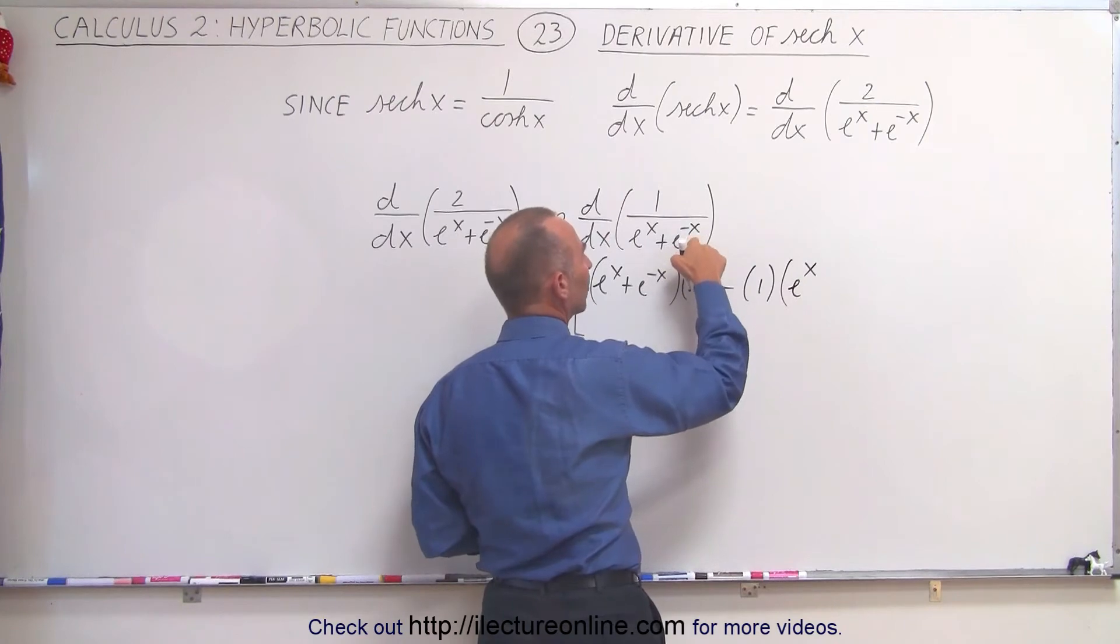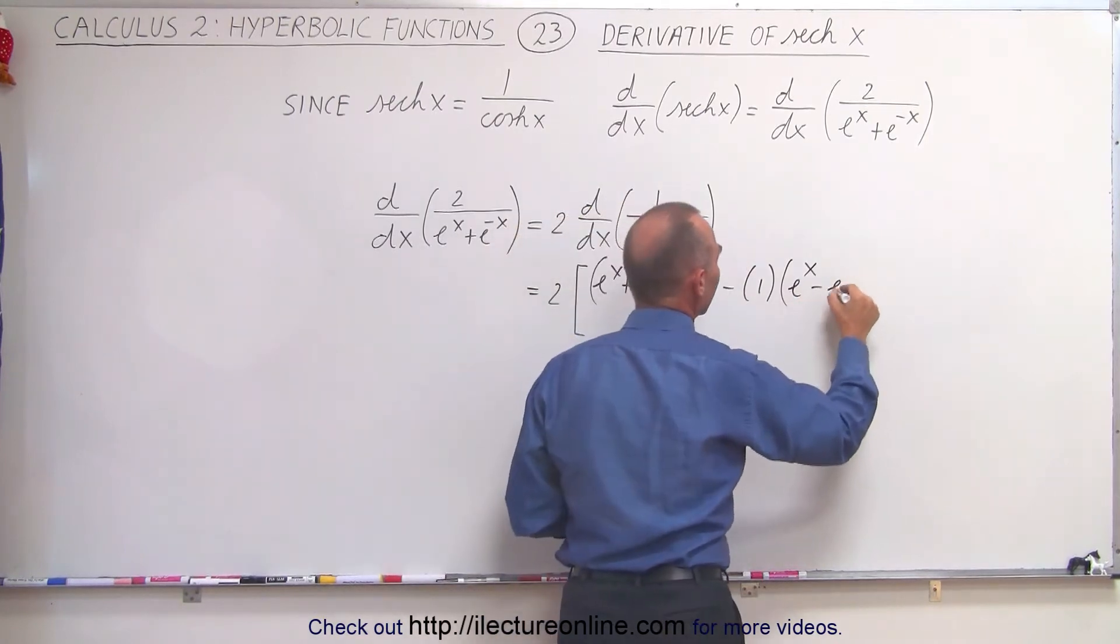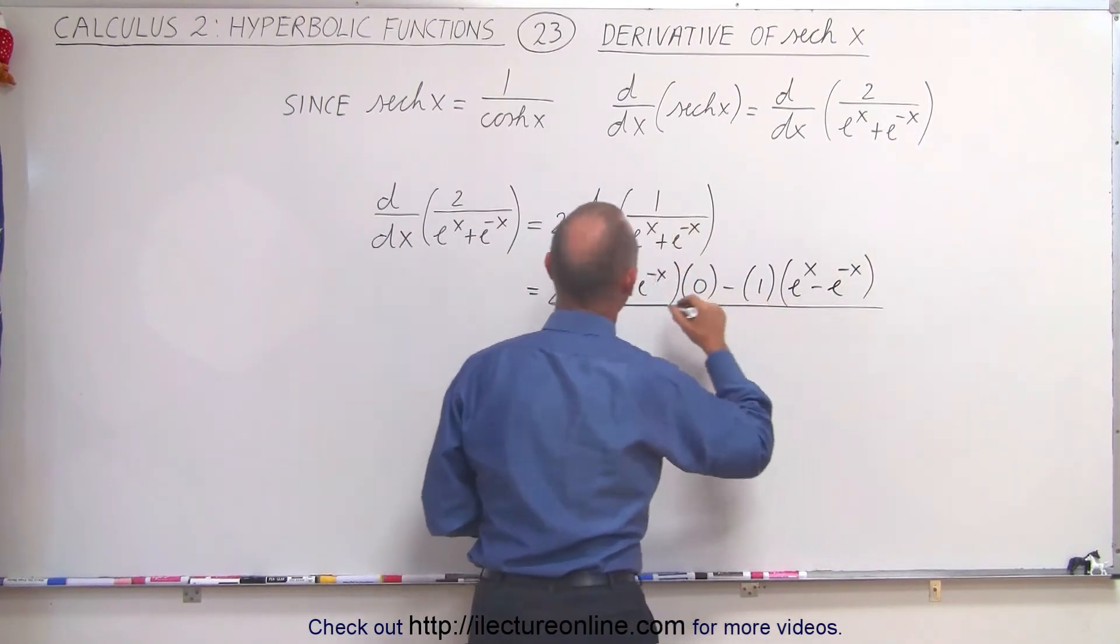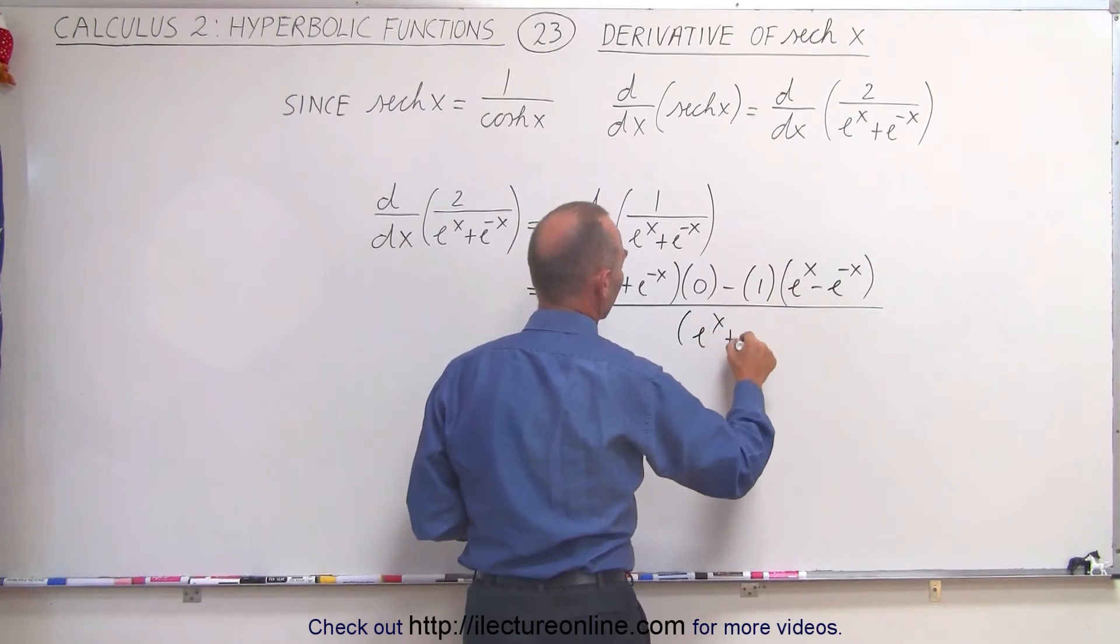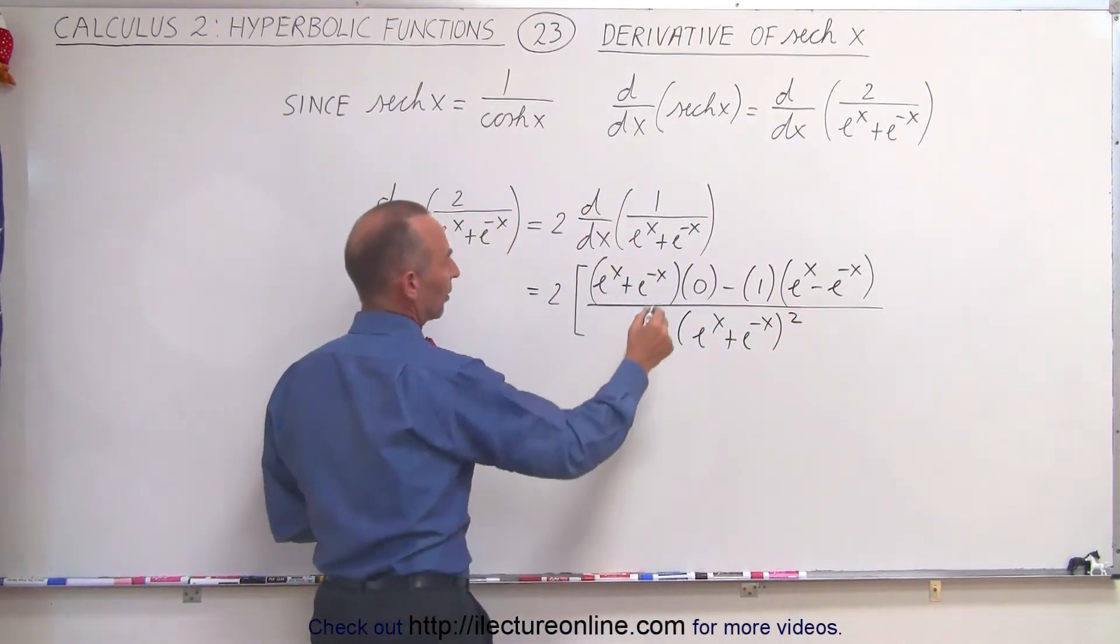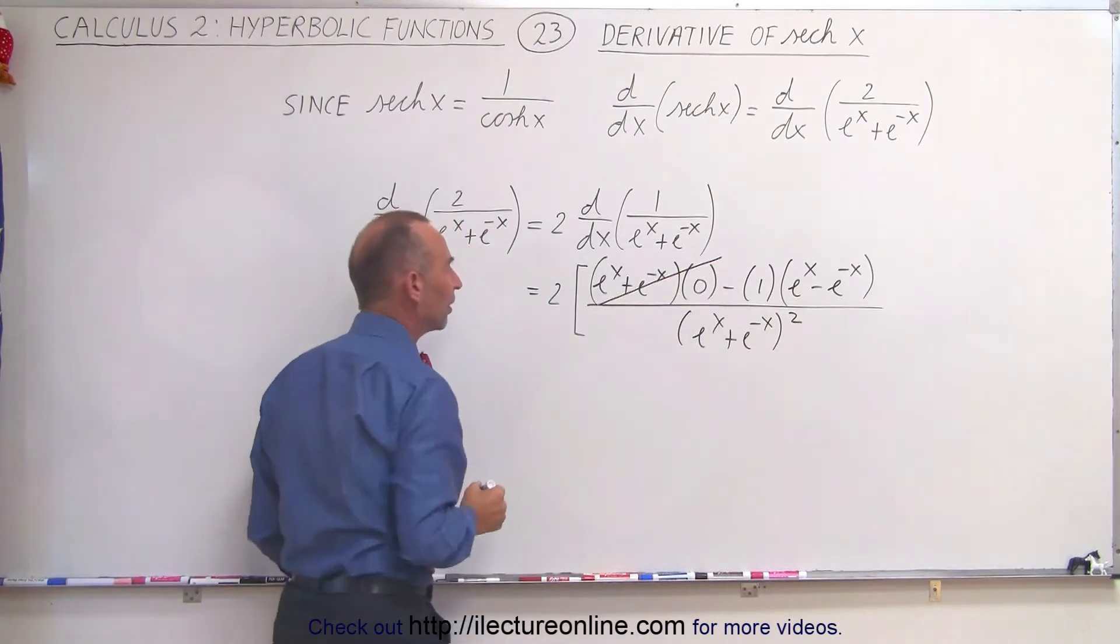And since it's e to the minus x, when I take the derivative, I add a negative 1, which makes this negative e to the minus x. The whole thing divided by the denominator squared, which is e to the x plus e to the minus x quantity squared. So notice that this here definitely goes to 0.